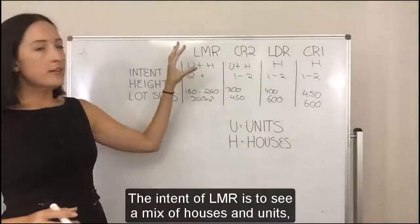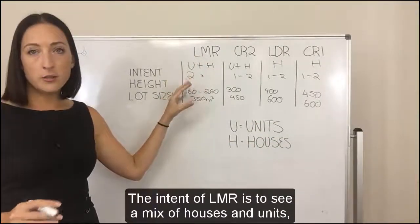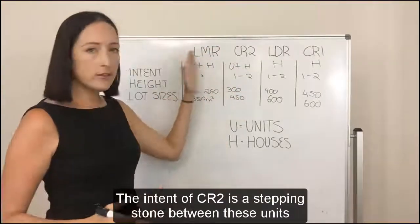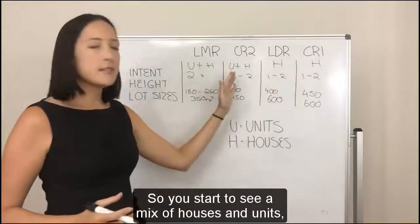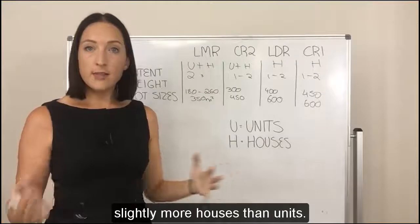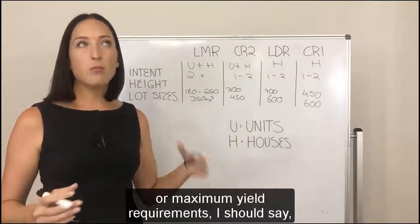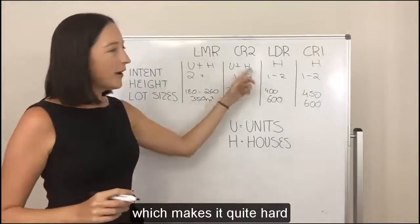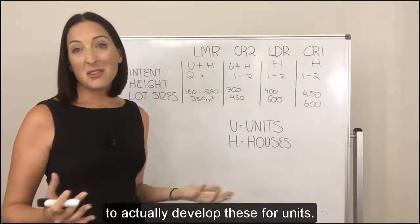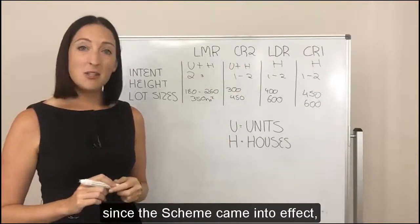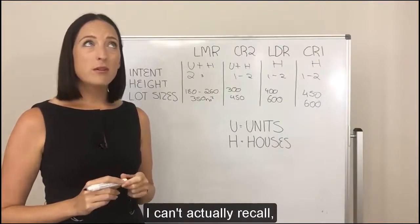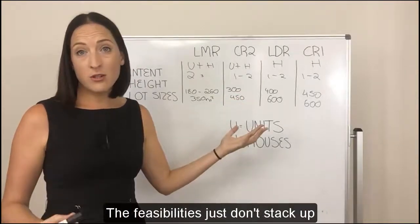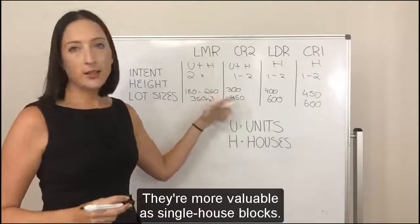So to recap: the intent of LMR is to see a mix of houses and units, predominantly two storeys. The intent of CR2 is a stepping stone — a mix of houses and units with slightly more houses than units. There's still a maximum yield of one per 300 square metres for units and townhouses, which makes it quite hard to develop for units. In the last three years since the scheme came into effect, I can only recall one or two examples where we've done units in this zone. The feasibilities just don't stack up — they're more valuable as single house blocks.